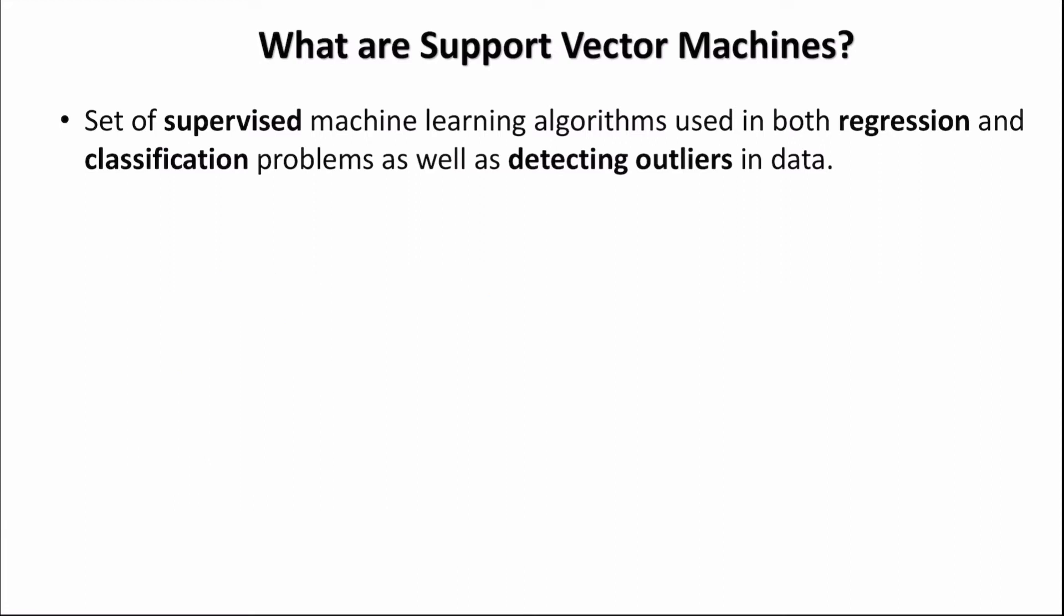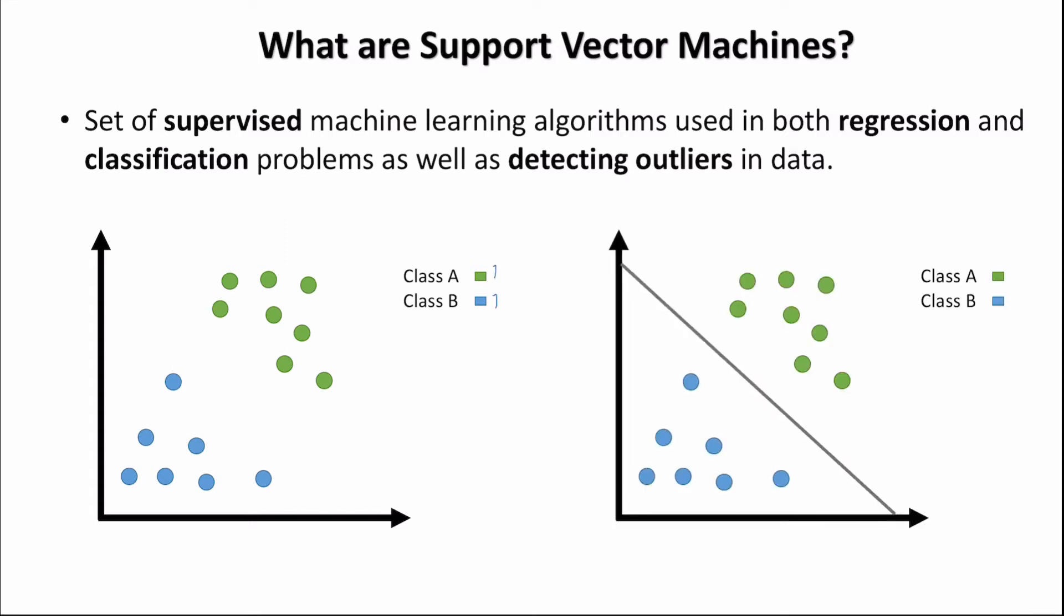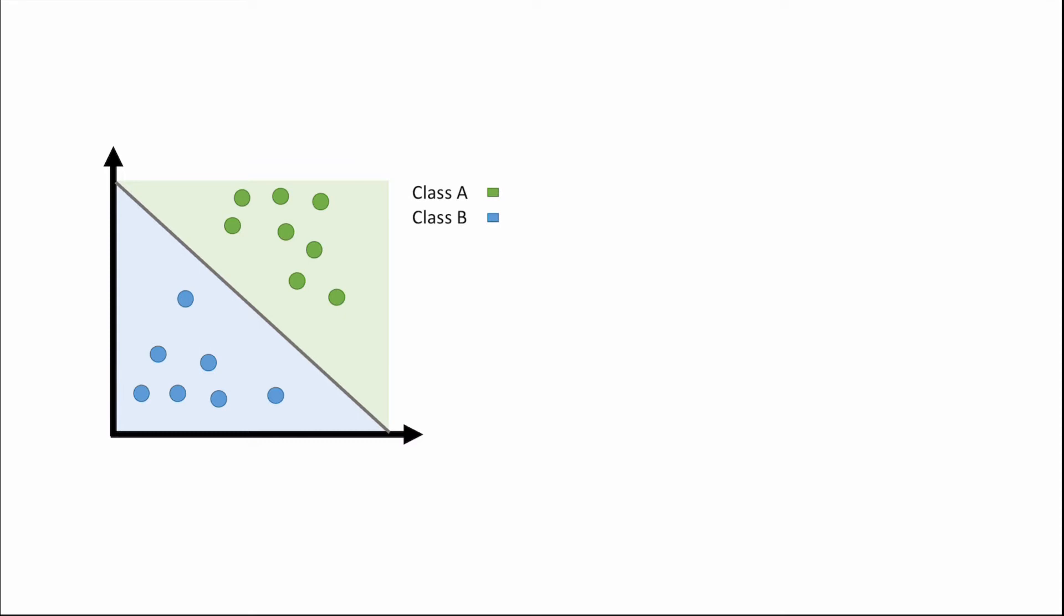They are however most commonly used for classification problems which will be the focus for this video. The job of a support vector machine for classification problems is to take labeled data such as the following. So here we have two labels, class A and class B, and we determine a hyperplane that separates the data. We can then use this hyperplane to make predictions for which class a new data point belongs to.